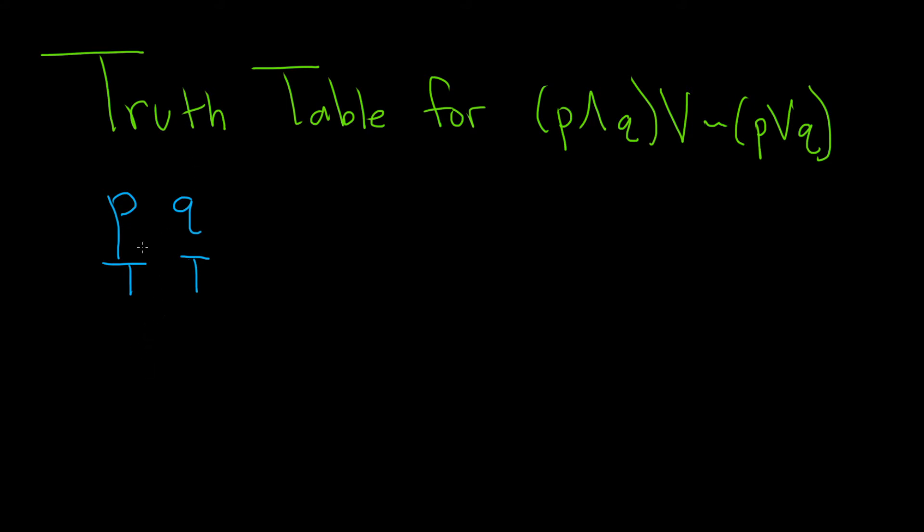Another simple case is when exactly one of them is false. So we can do T, F, and then we can switch it and do F, T. And the very last case is when they're both false.